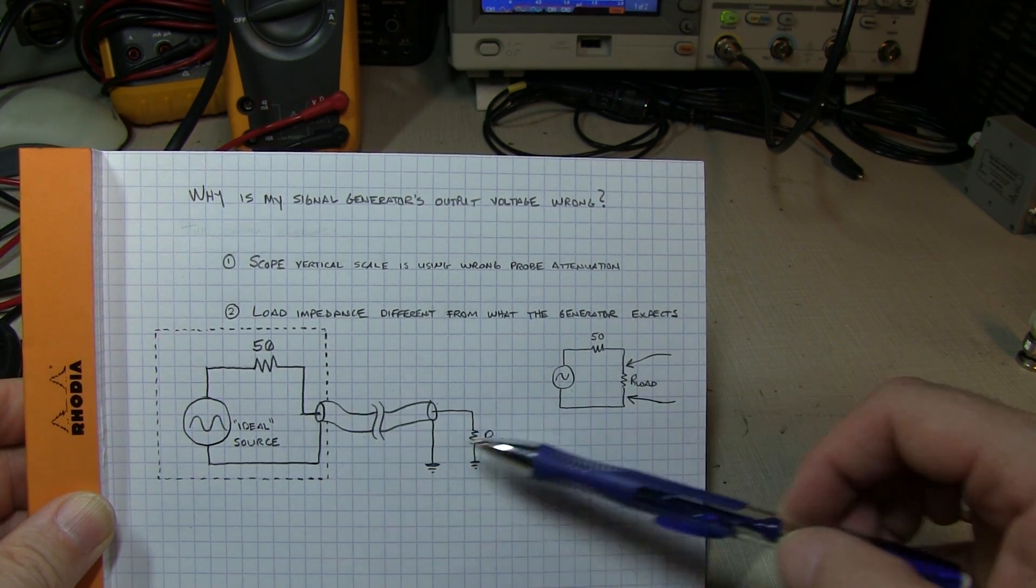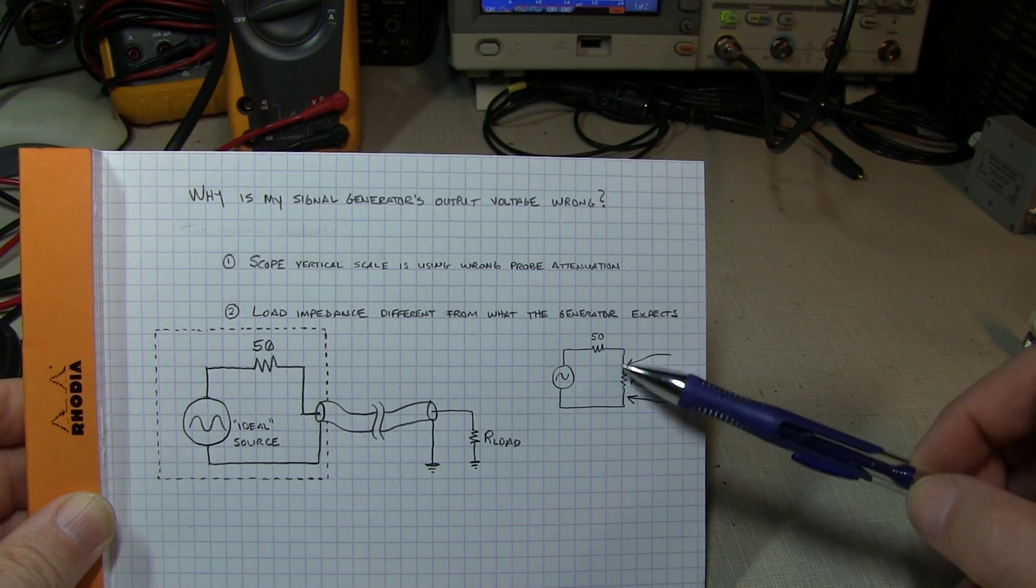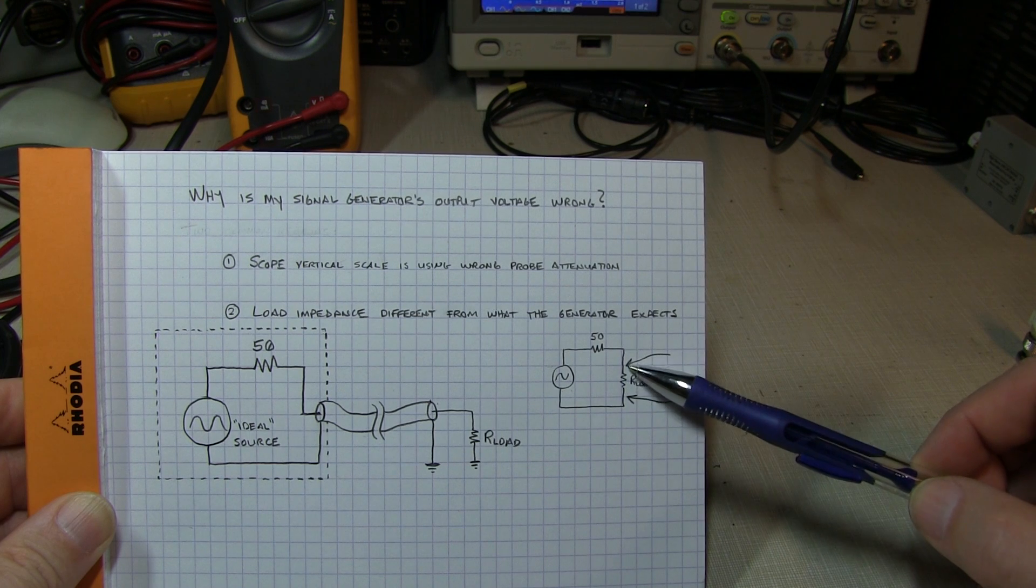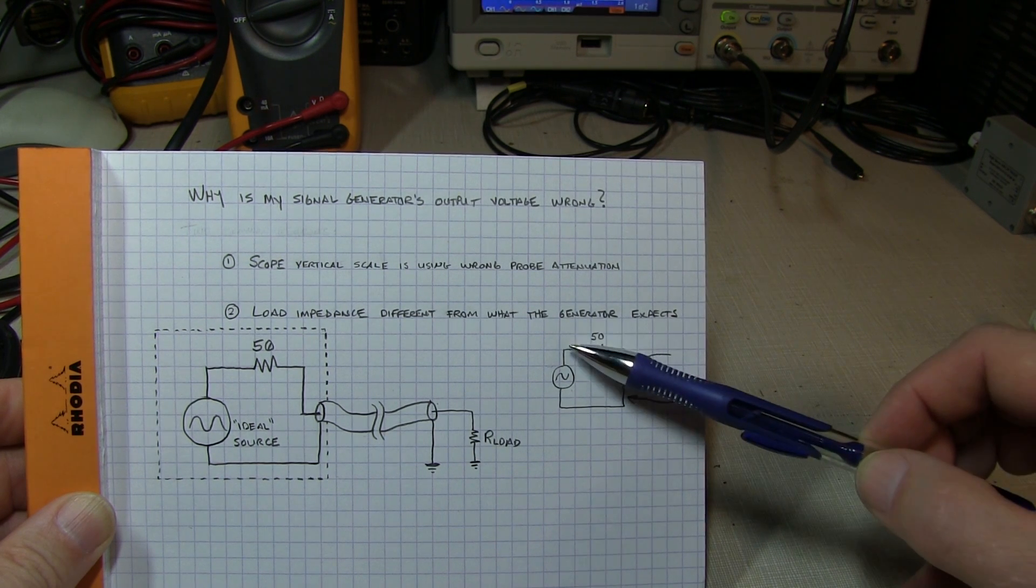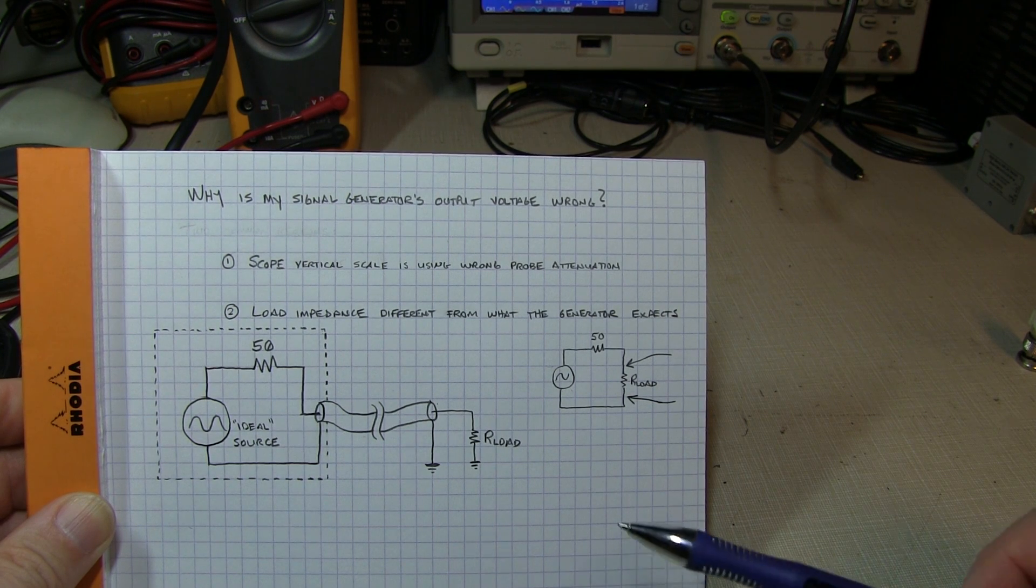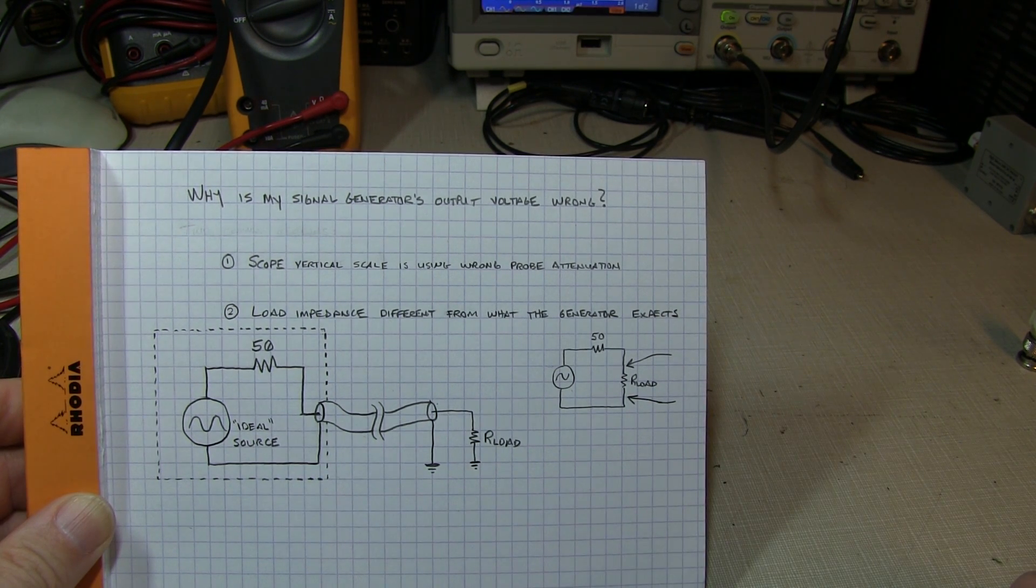When I tell this function generator I want to put out one volt peak to peak at the load, it's assuming that that load is 50 ohms. So if I've got 50 ohms here and 50 ohms here to create one volt peak to peak here, it has to put two volts peak to peak there.